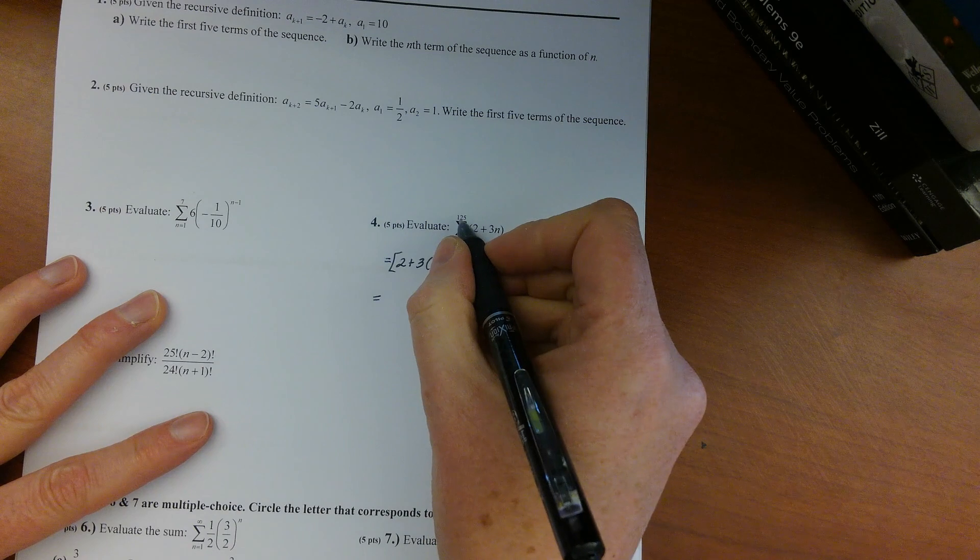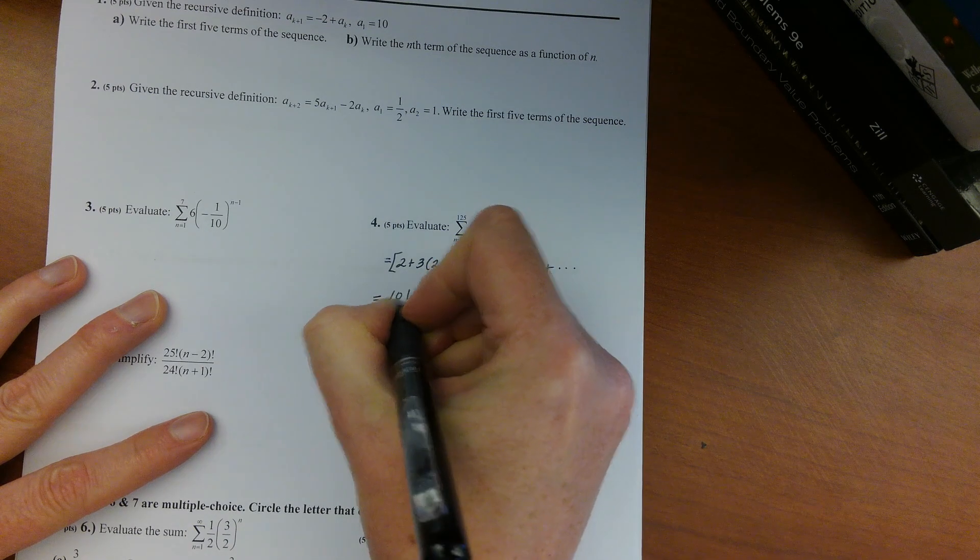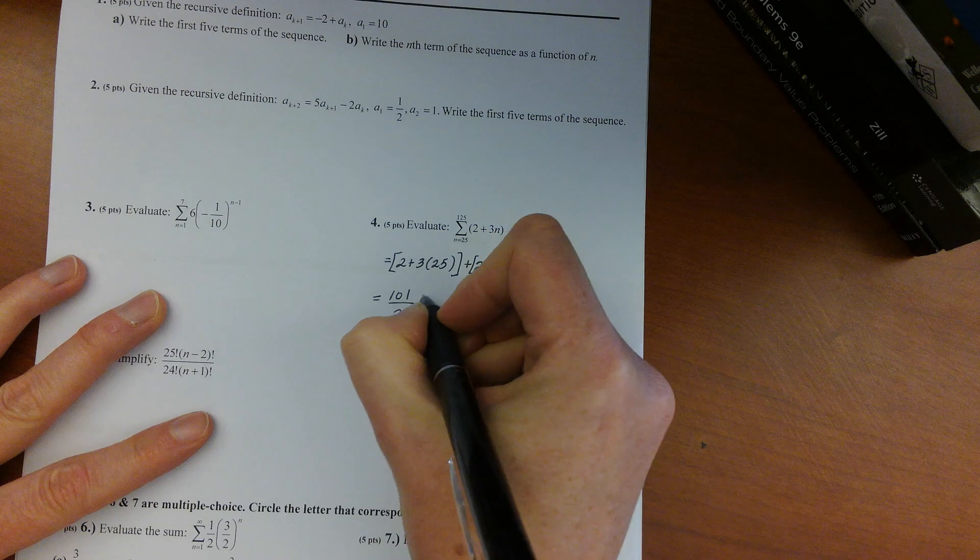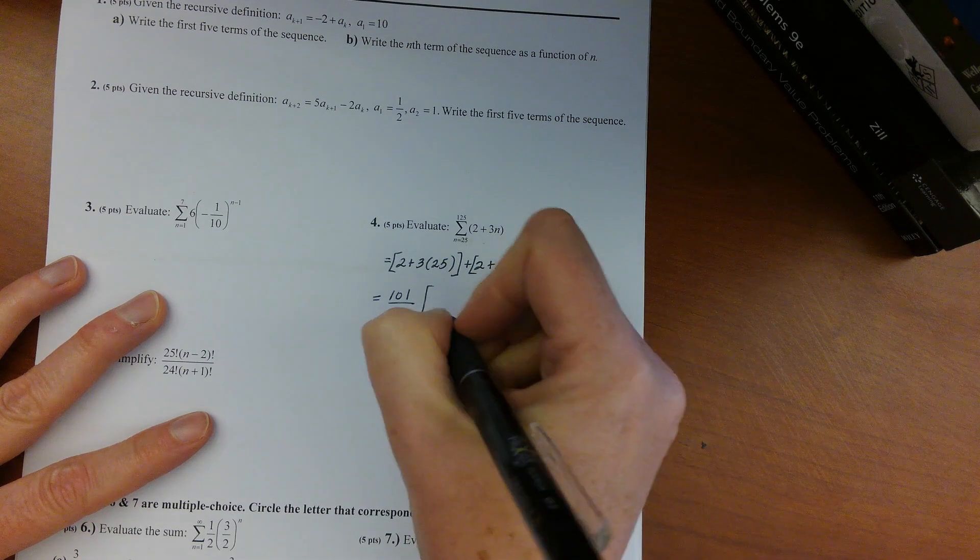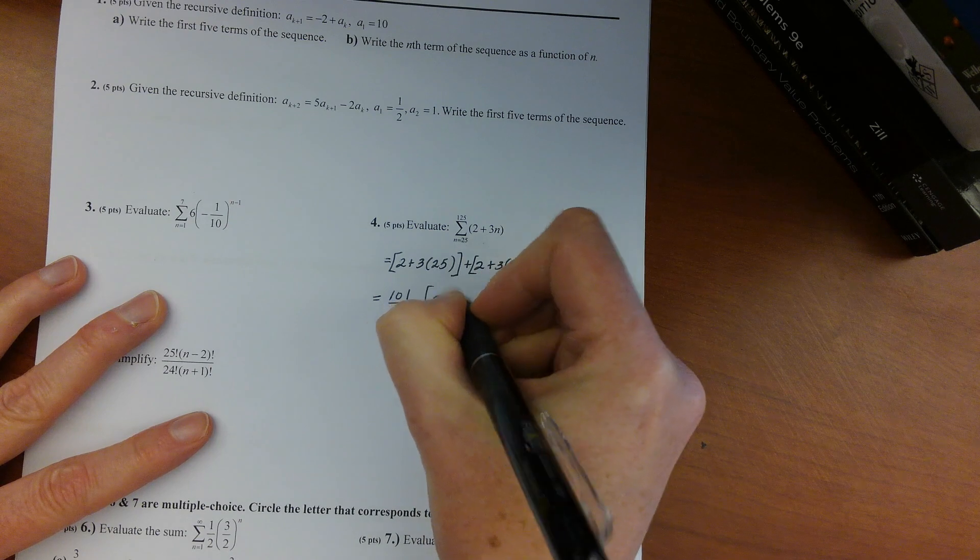So that means there would be 101 terms divided into 2 so you'd get pairs, and then each pair would add up to the value of your first term, which would be 2 plus 3 times 25, which I guess would be 77.